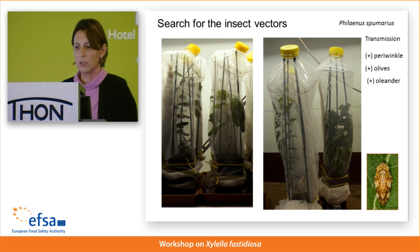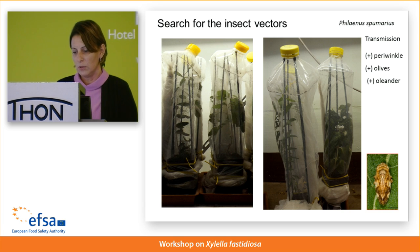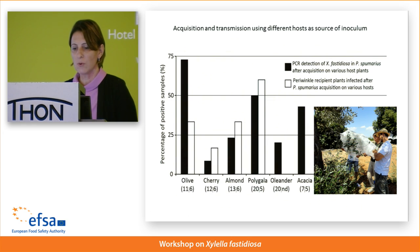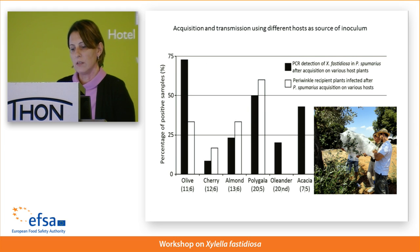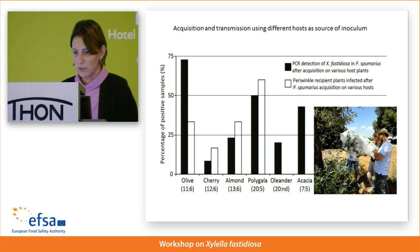With Philaenus spumarius, besides the first experiment addressing transmission on periwinkle, during the last two years several transmission experiments have been carried out to prove their ability to transmit the bacterium to olive and oleander, with successful results. Experiments have also been made with Philaenus spumarius collected from pest-free areas and caged on different infected hosts to prove they were able to acquire the bacterium from different hosts, and this was confirmed.